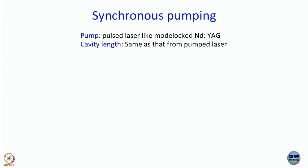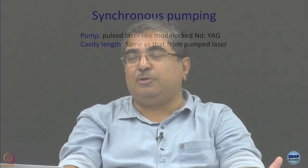In synchronous pumping, one pumps the dye laser not with a CW laser, but with a pulsed laser. We are talking about rhodamine 6G dye lasers. I pump it with green light at 532 nanometers, but the 532 nanometer light itself consists of, say, 20 picosecond pulses at 80 megahertz or something like that.